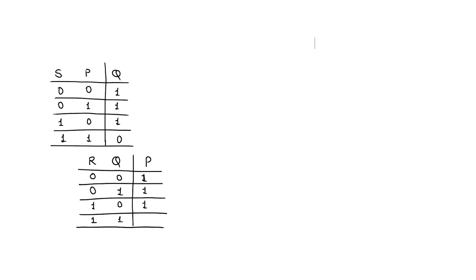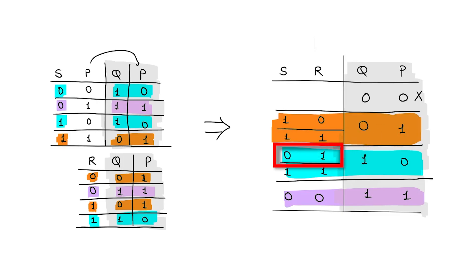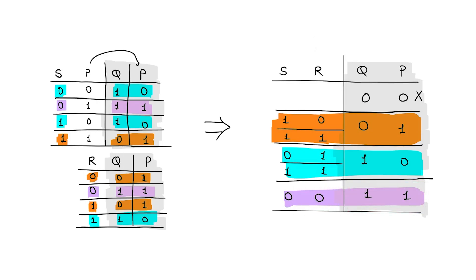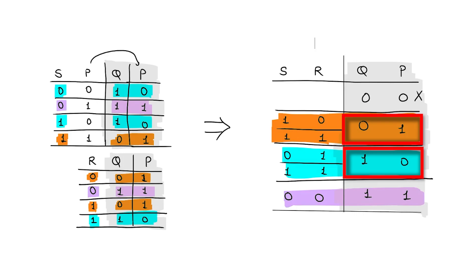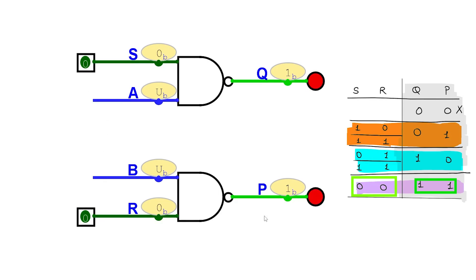Rearranging the tables, we find which input combinations are related to output combinations. The outputs are never zero. When inputs are one and zero, the output should be zero and one. When inputs are zero and one, the output should be one and zero. When both inputs are zero, both outputs are one. The anomaly occurs when both inputs are one and one, which can produce both output combinations — normally this should not happen, but it does, and it is an exploitable feature. Let's try to confirm the behaviors.